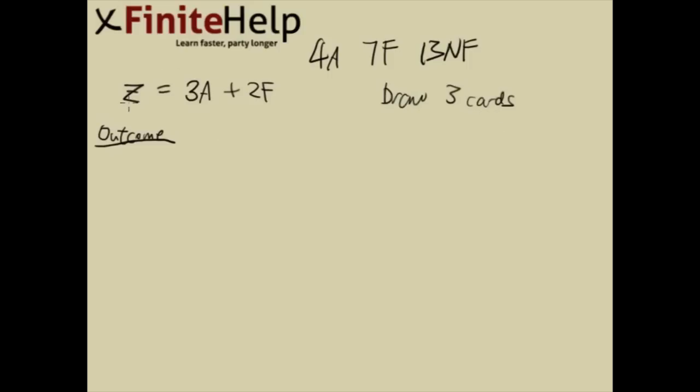Before we're worrying about Z, let's worry about the outcomes. We're looking at these cards and we're going to draw 3. It could be kind of hard to know how to list out all the outcomes when there are so many different ones. Here's a way to think about it, make it more mechanical and less chance to make an error.